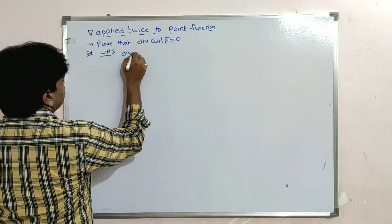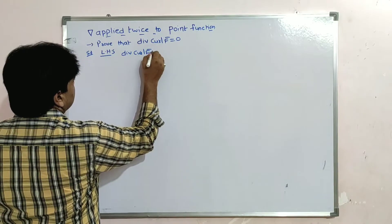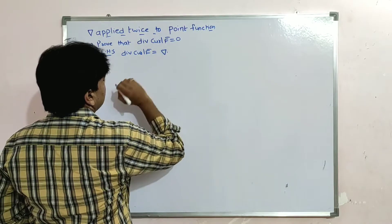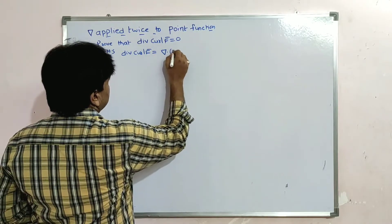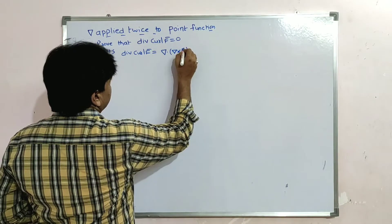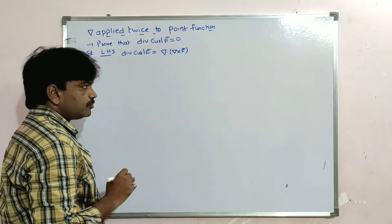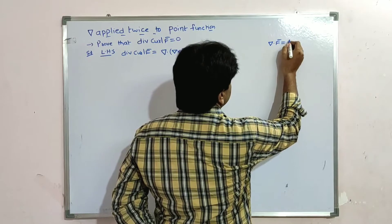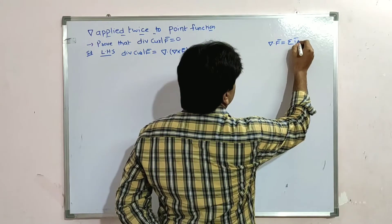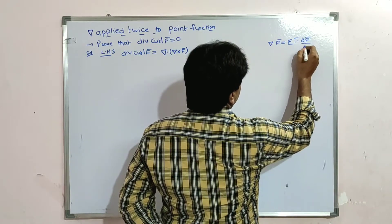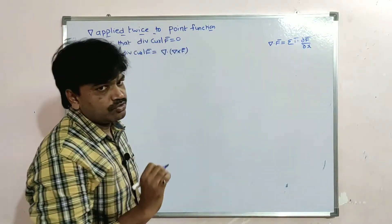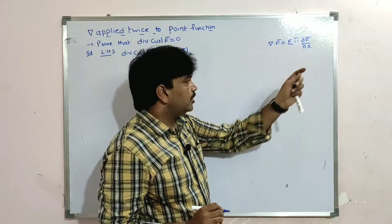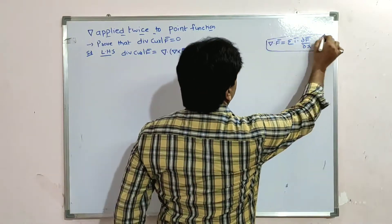LHS is div(curl F̄). Div means del dot, so this is del dot (del cross F̄). We know del dot F̄ can be written as sigma of i̅ dot (∂F̄/∂x).